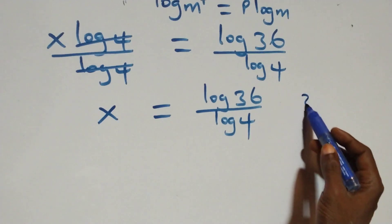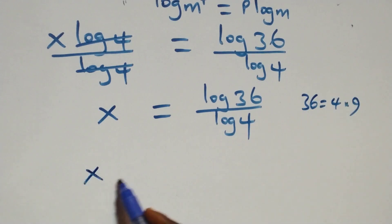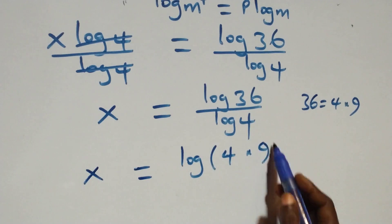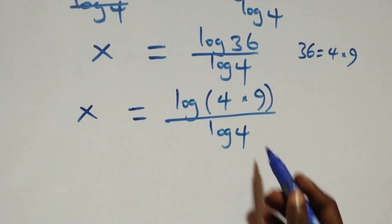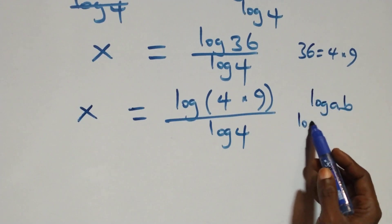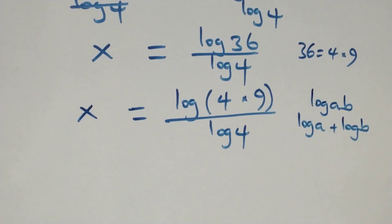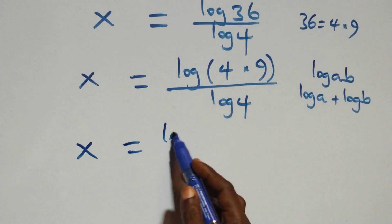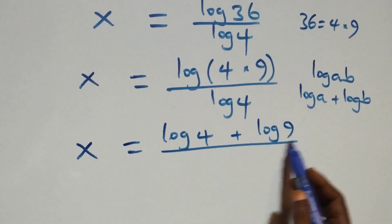Next, 36 can be expressed as 4 times 9, so we have x = log(4×9) / log4. This follows from the law of logarithms: log(a·b) = log(a) + log(b). So this becomes x = (log4 + log9) / log4.